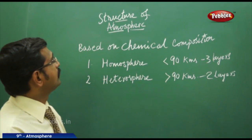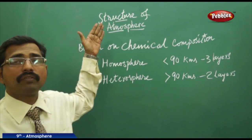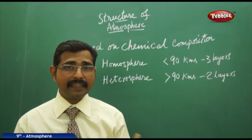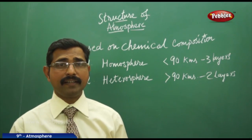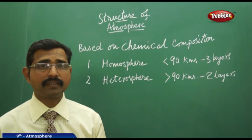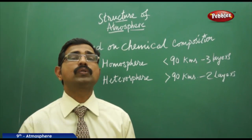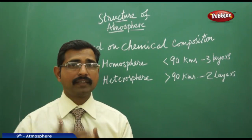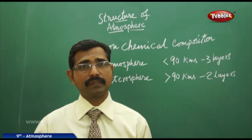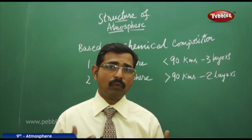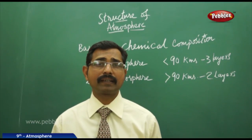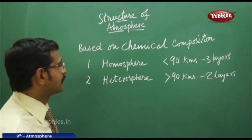Today we will discuss the structure of the atmosphere. Just as we have already learnt that the interior of the earth has three layers, similarly the exterior of the earth — the blanket of gases — also has various layers. These layers are not uniform in their characteristics and chemical composition. We will discuss what these layers are composed of, how many types there are, and what their characteristics are.